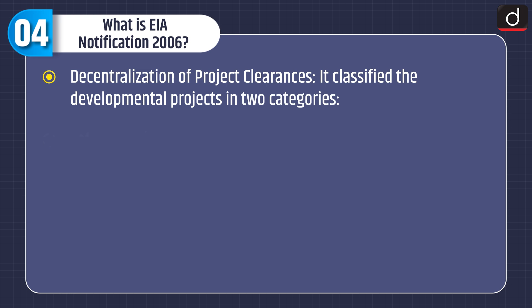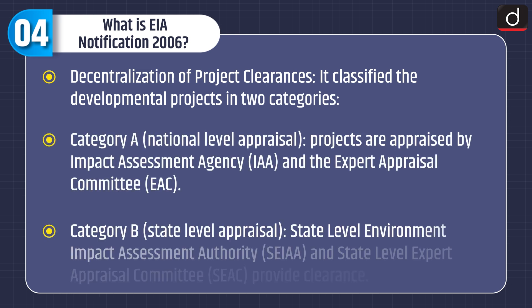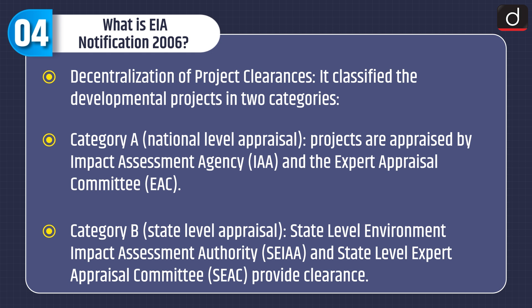Now let's understand EIA notification 2006. It introduced decentralization of project clearances, classifying developmental projects into two categories. Category A involves national level appraisal — projects are appraised by the Impact Assessment Agency (IAA) and the Expert Appraisal Committee (EAC). Category B involves State Level Appraisal, where the State Level Environment Impact Assessment Authority (SEIAA) and State Level Expert Appraisal Committee (SEAC) provide clearance.